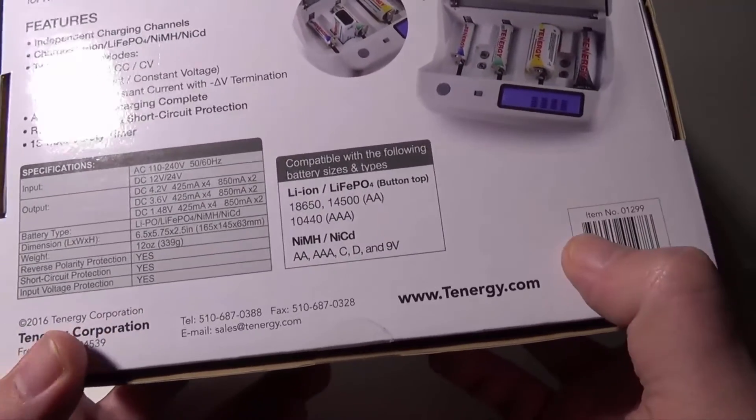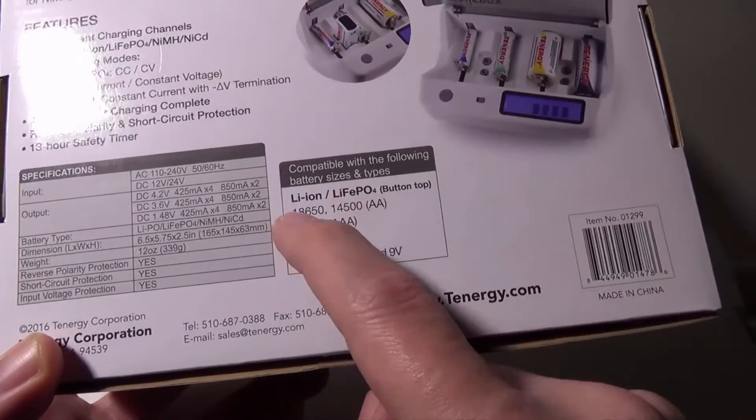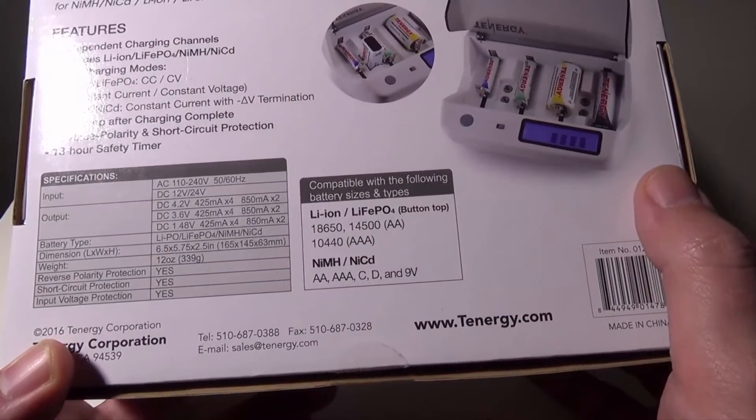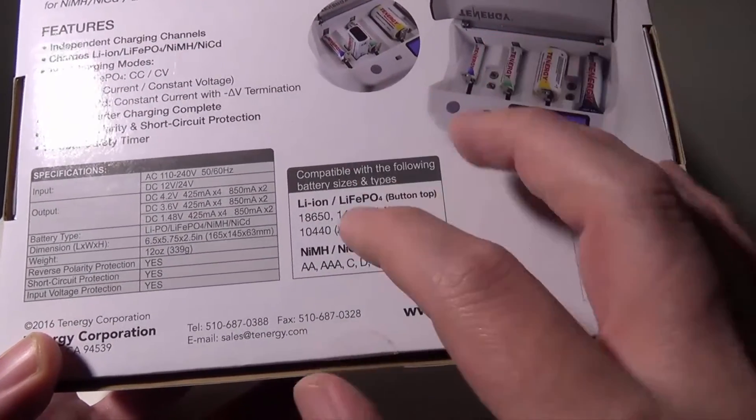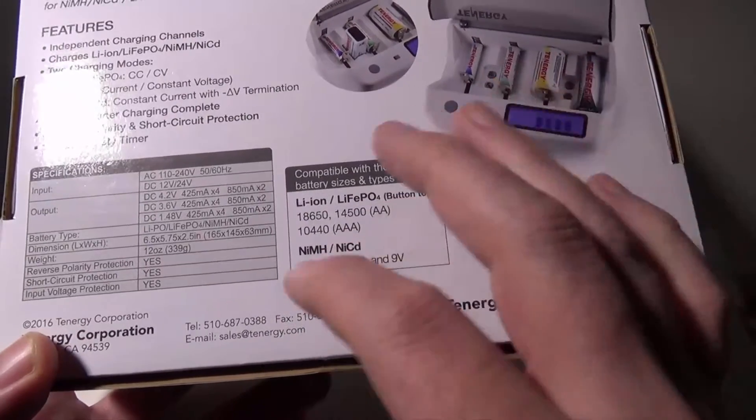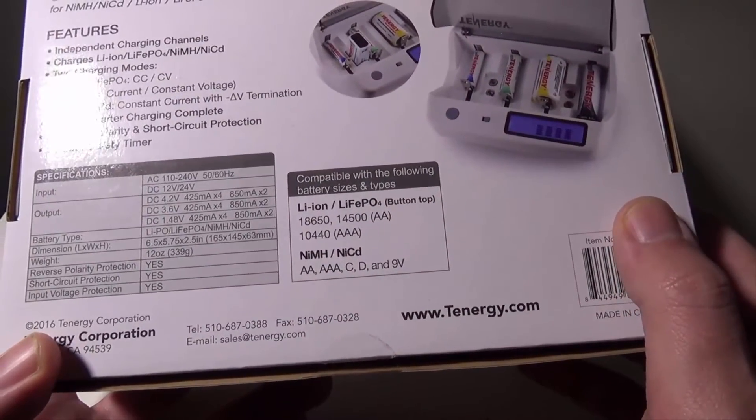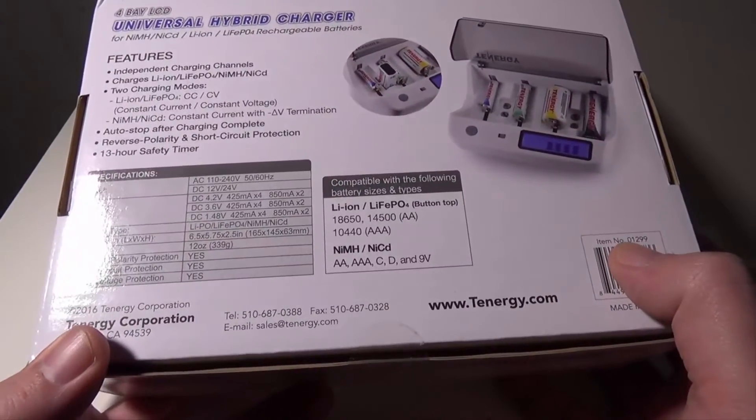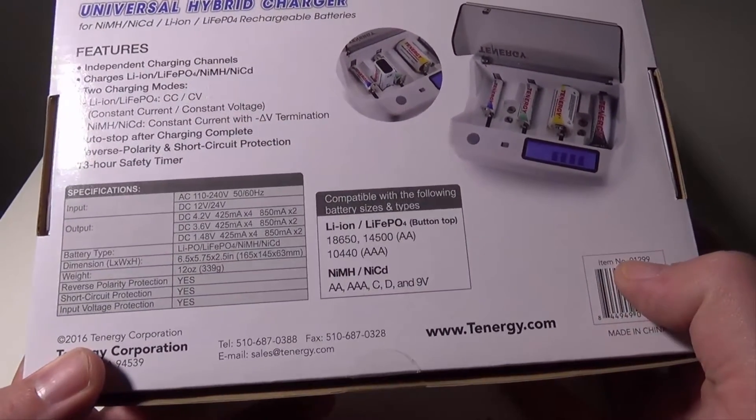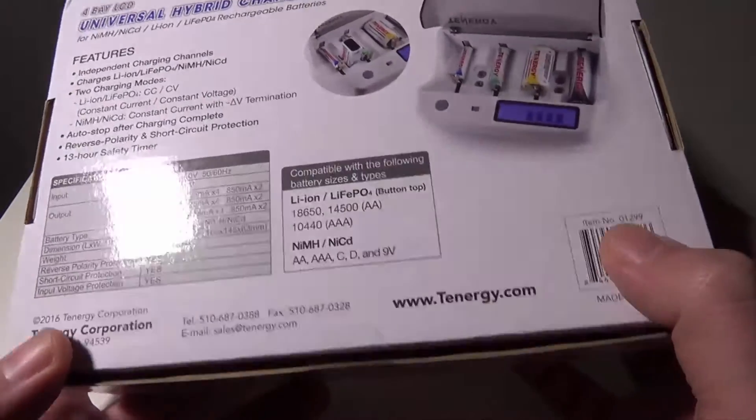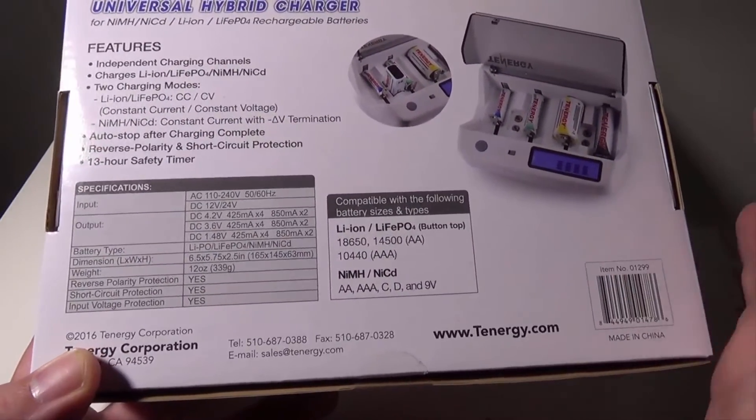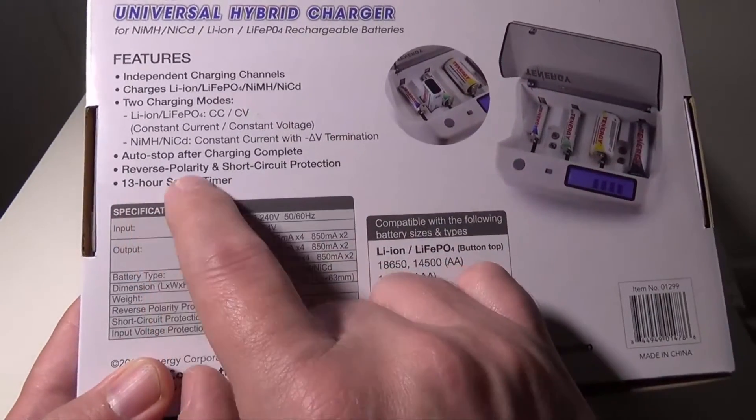18650 for you e-cig users out there, they're very common batteries. Your double-A and triple-A's for your rechargeables, and even that 9-volt for those pesky batteries that you'll need to replace in your smoke detectors here in the United States. You've got all that. It's got a 13-hour safety timer, reverse polarity and short circuit protection.